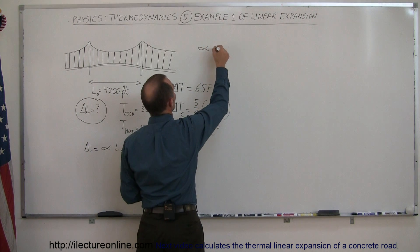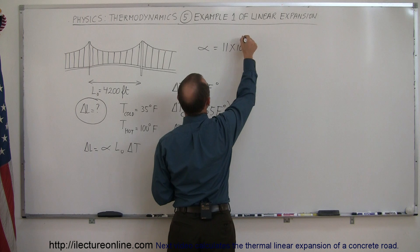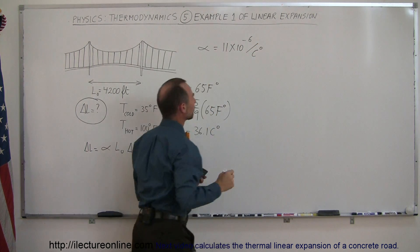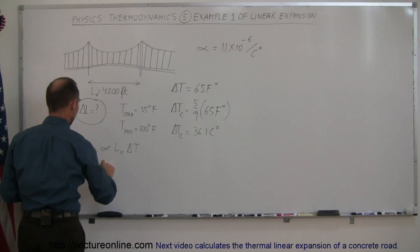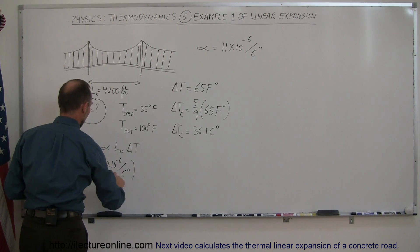the coefficient of linear expansion is 11 times 10 to the minus 6 per centigrade degree. All right, now let's plug that in here. So this is equal to 11 times 10 to the minus 6 per centigrade degree. Original length, 4,200 feet.